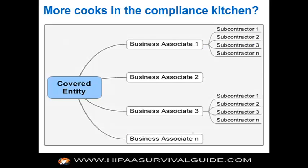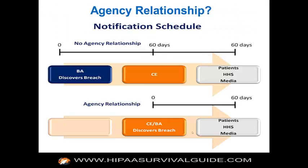From a diagram perspective: a covered entity has business associate relationships one through n. Each business associate has subcontractor one through subcontractor n. A covered entity is not required to do due diligence on subcontractors — that's the responsibility of the business associate. A subcontractor could likewise have subcontractors, and the business associate would not be responsible for those. Everyone is responsible for their direct next level of business associates.